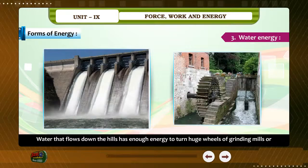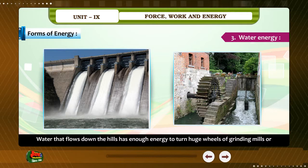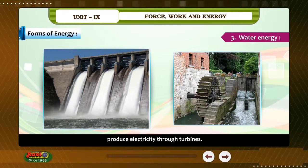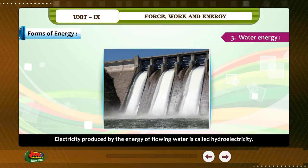Water Energy. Water that flows down the hills has enough energy to turn huge wheels of grinding mills or produce electricity through turbines. Electricity produced by the energy of flowing water is called hydroelectricity.